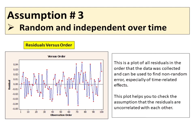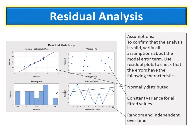The third assumption is random and independent. A method of checking this is to construct a residuals versus order plot. This is a plot of all residuals in the order that the data was collected, and can be used to find non-random error, especially time-related effects. This plot helps you check the assumption that the residuals are uncorrelated with each other. In this example, the residuals fulfill all three assumptions: normally distributed, constant variance for all fitted values, and random and independent over time.